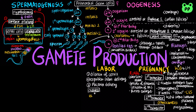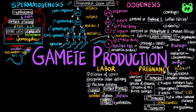First, the ovaries secrete estradiol, which induces oxytocin receptors on the uterus. Next, oxytocin secreted from the fetus and the mother's posterior pituitary stimulates the uterus to contract, as well as stimulating the placenta to make prostaglandins, which stimulate more uterine contractions. Prostaglandins play a role in a positive feedback loop that stimulates the placenta to make more prostaglandins, as well as stimulating an increase in oxytocin production.